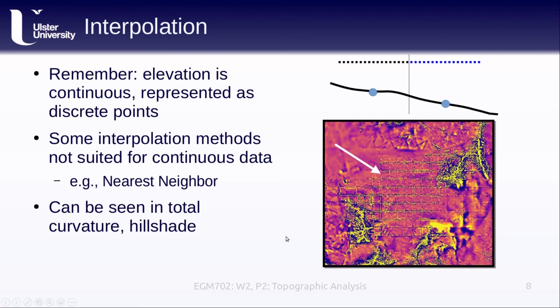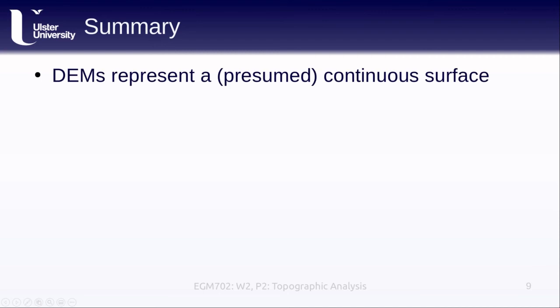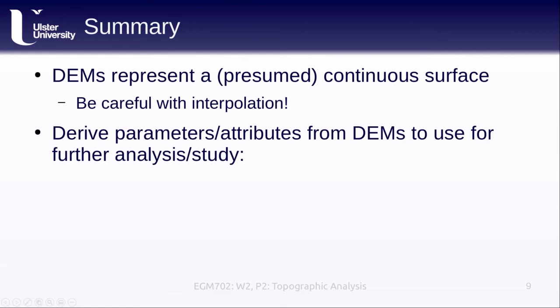To sum all of this up: we are assuming most of the time that the DEMs that we're using represent a continuous surface, which means we need to be very careful when we are interpolating. We can derive different parameters and attributes from our DEMs that we use in further analysis or further study, including things like slope and aspect, which is the first derivative of the elevation surface and the direction of that gradient, and also the curvature or the second derivative of the surface, which we can calculate in a number of different ways.